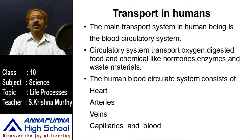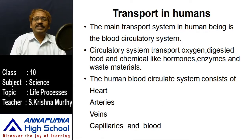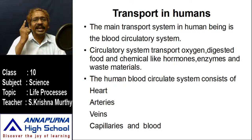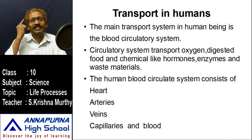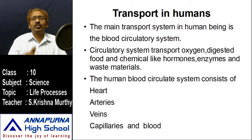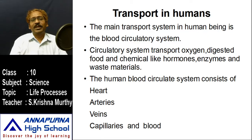The circulatory system consists of heart, blood vessels, and blood. Blood vessels are three kinds: arteries, which are the big blood vessels; veins, which are smaller blood vessels than arteries; and capillaries, which are very minute, hair-like structures. Arteries, veins, and capillaries all belong to the blood vessels.